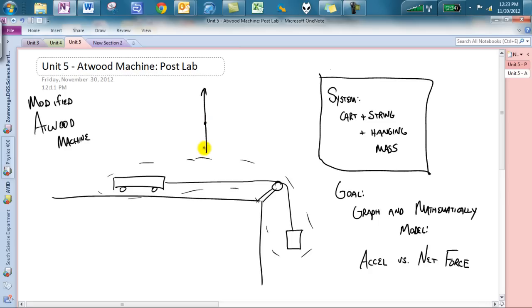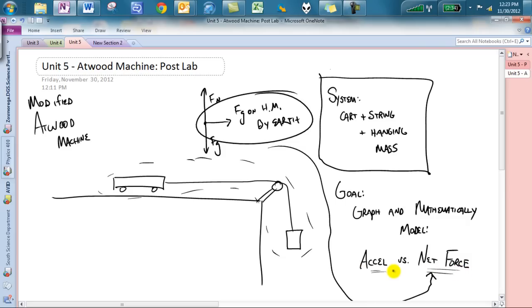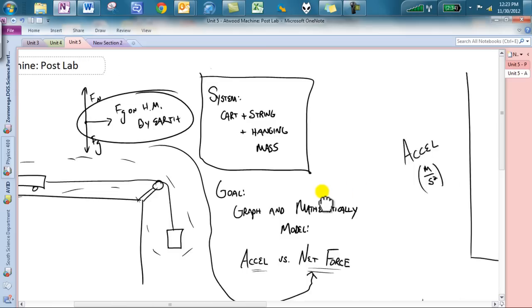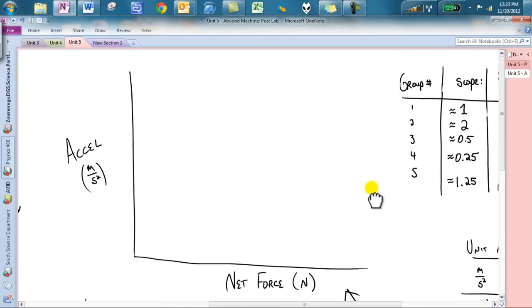So when you drew that force diagram you will realize that your net force, and if you had trouble with this go back to the force diagrams from the pre-lab, the net force is the Fg on the hanging mass by Earth. So we made that connection, we said that is going to be the net force in our situation and we are graphically and mathematically seeing how our net force, by changing the net force, how does it affect the acceleration. So that is what we have been looking at and let's jump right into it.